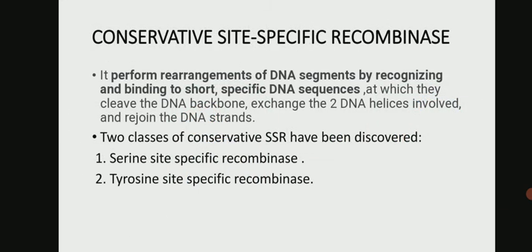Site-specific recombination is carried out with the help of proteins known as recombinases, also known as conservative site-specific recombinases. They perform rearrangements of DNA segments by recognizing and binding to short specific DNA sequences at which they cleave the DNA backbone, exchange the two DNA helices involved, and rejoin the DNA strands. On the basis of amino acid sequence homology, they are divided into two classes: serine site-specific recombinase and tyrosine site-specific recombinase.